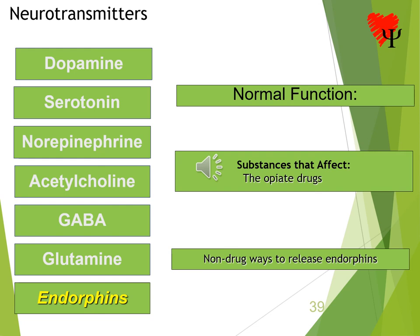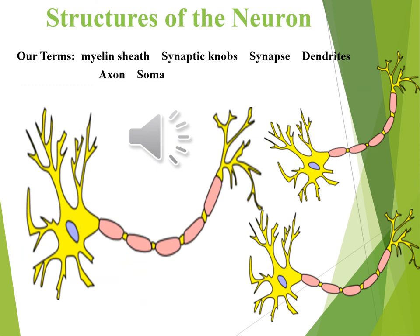Take a moment and see if you can label the different neuron structures and identify what each does. Check your studying for accuracy and weaknesses as you go along — you'll find it much more effective and you'll be much happier with your test results.